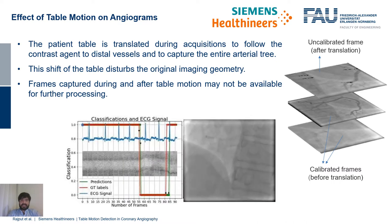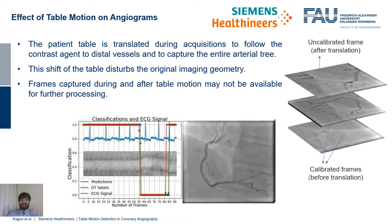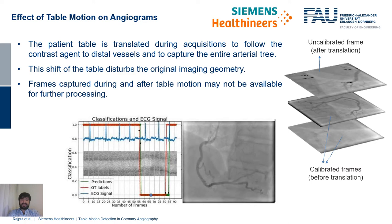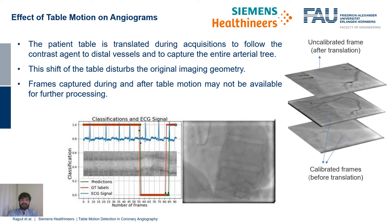Here is an example of an ICA acquisition. In this example, frames 1 to 55 show no table motion, as the spine is static throughout these frames. Frames 56 to 82 show a shift in the spine from right to left, as these frames are captured during table motion. Hence, these frames and the frames after them cannot be utilized for 3D modeling of the arterial tree.